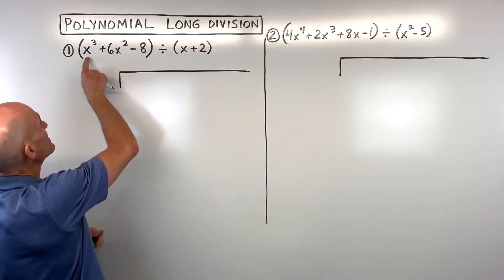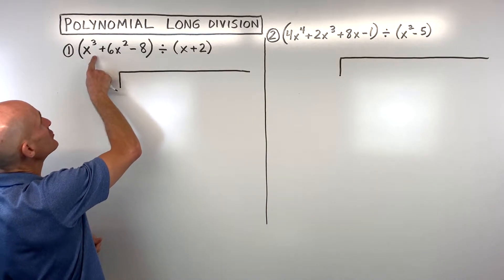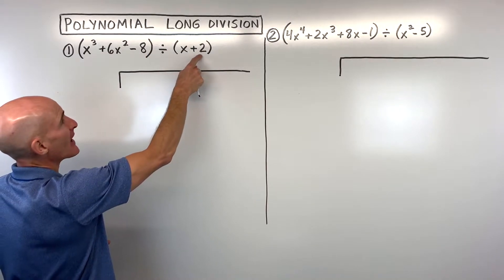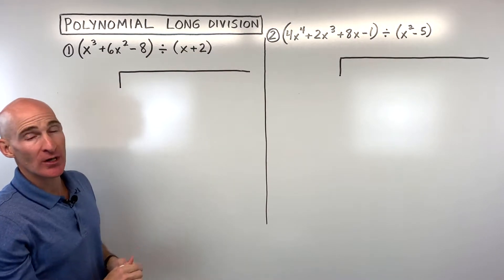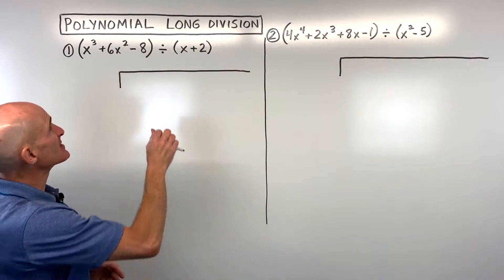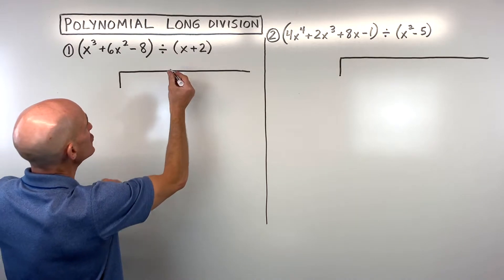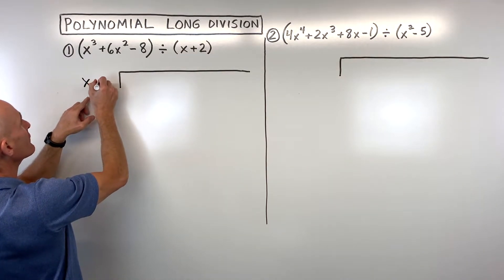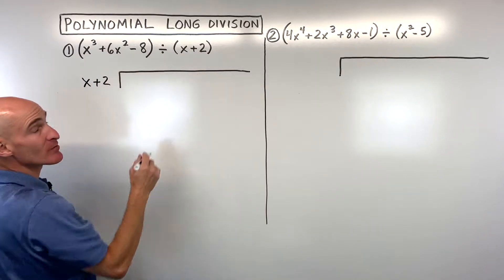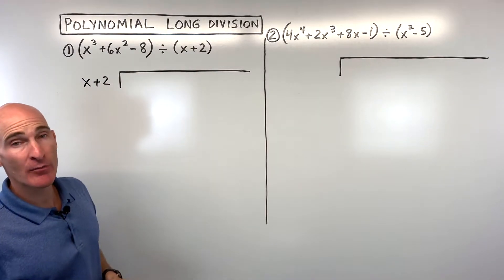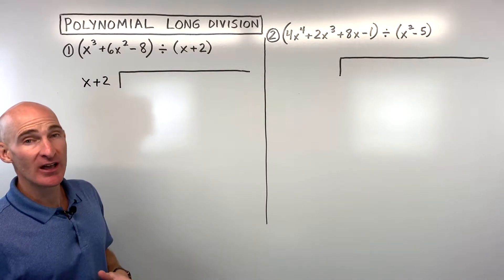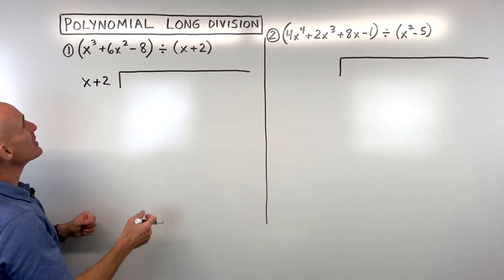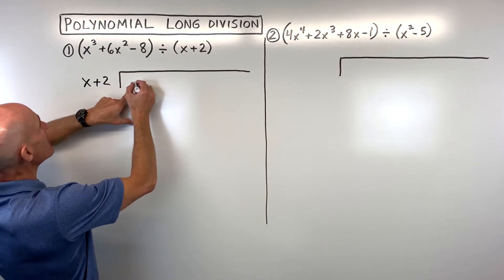The first example says x cubed plus 6x squared minus 8 is being divided by x plus 2. So the way that we set this up, since it's being divided by x plus 2, we're going to put the x plus 2 here in front of our division bar. You remember learning how to divide whole numbers before, and so you're familiar with this basic setup.